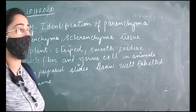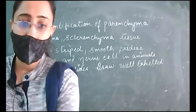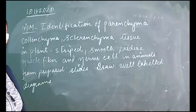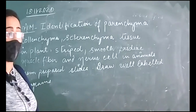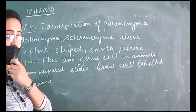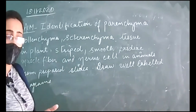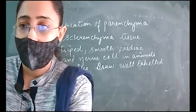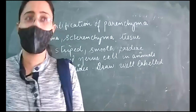You have to write the activity in the activity file. This is the second experiment you are having this term. We have already done plant and animal cell practicals in the first term. The permanent slides cannot be easily seen directly, so the video will help you understand what to observe.